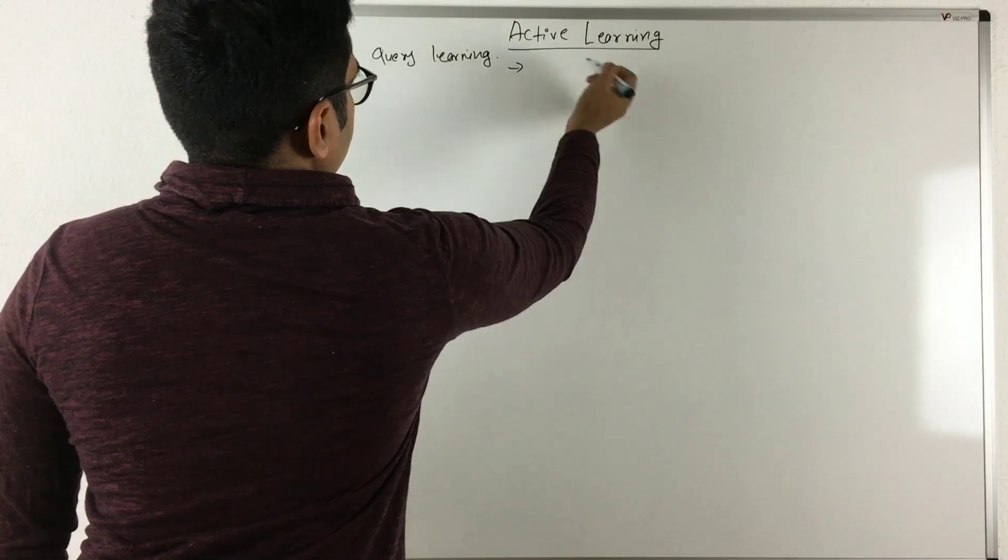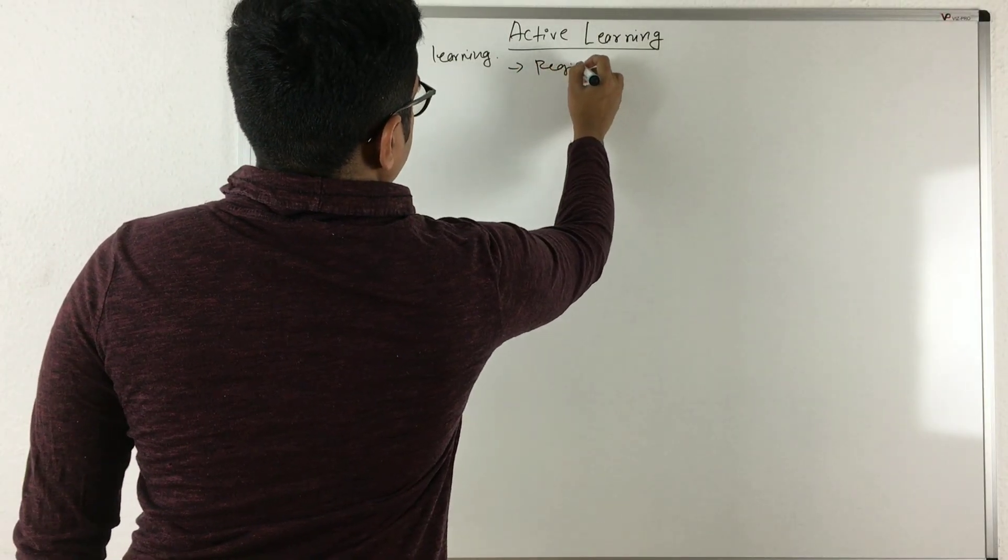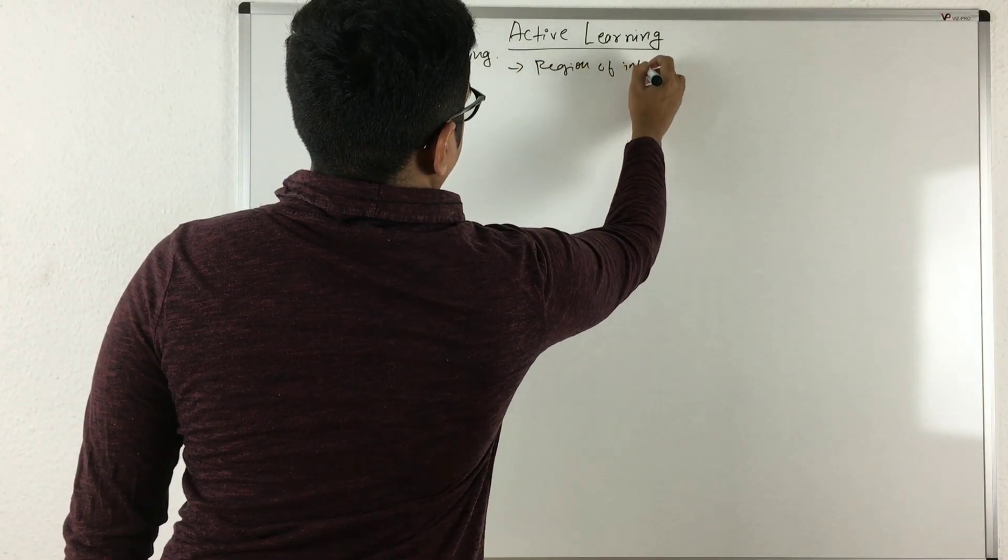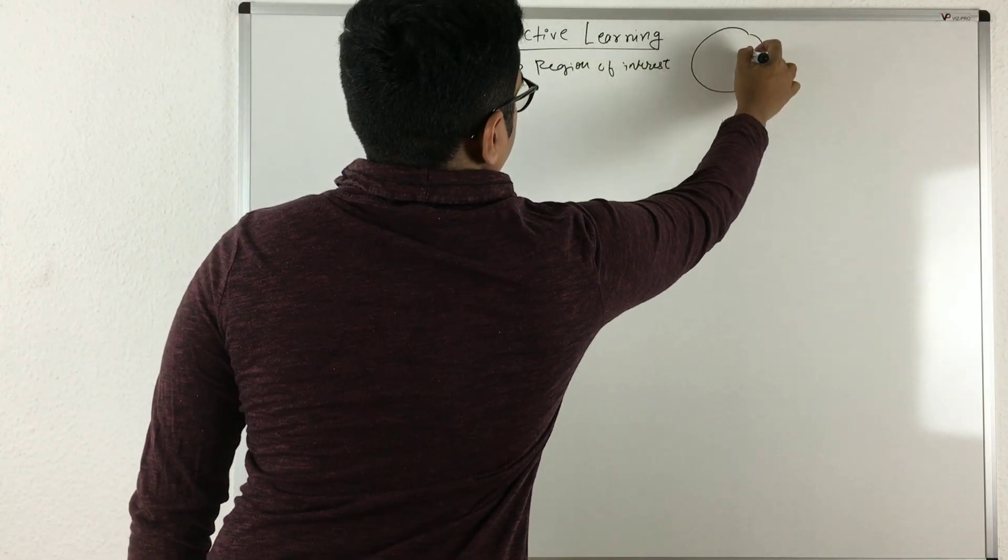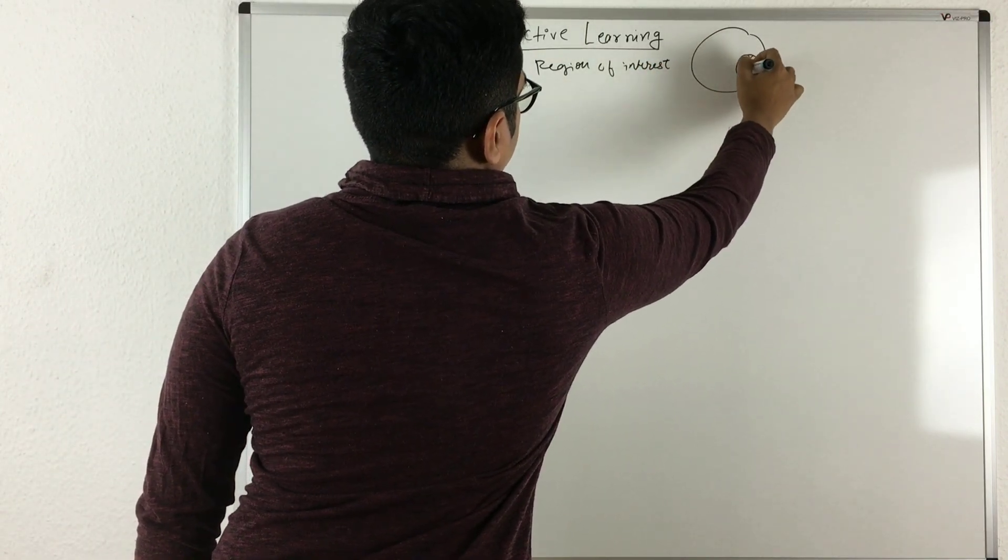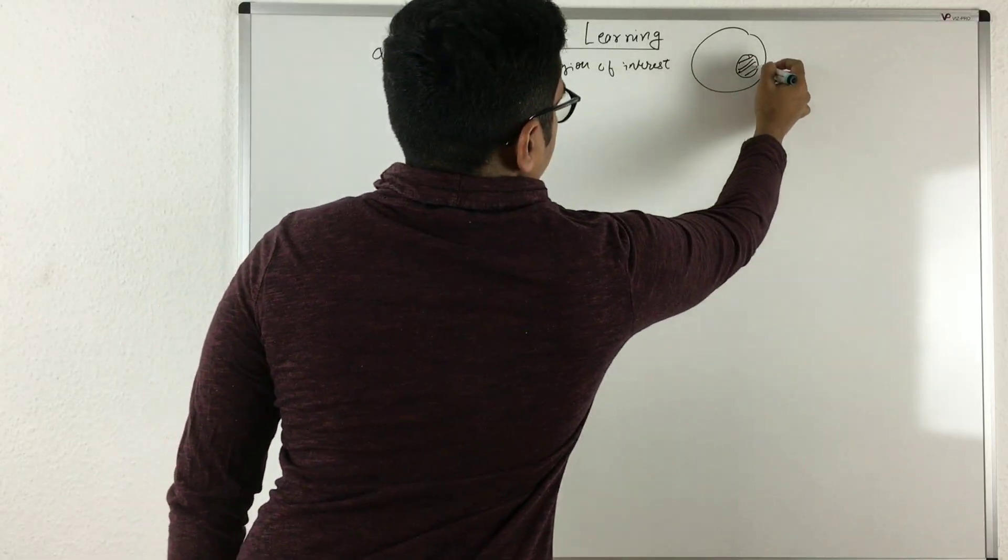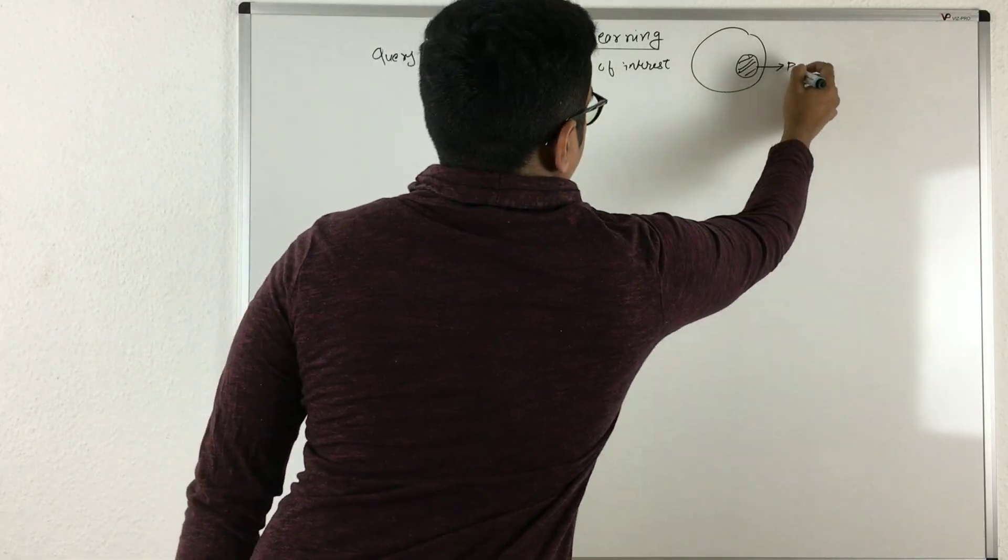It's basically focused on the region of interest. Say you have a large area and you may be interested only in this portion of this large area. So this is basically your region of interest, ROI.